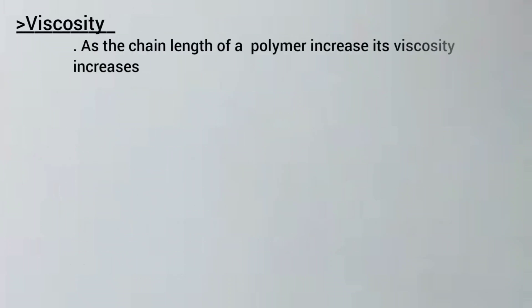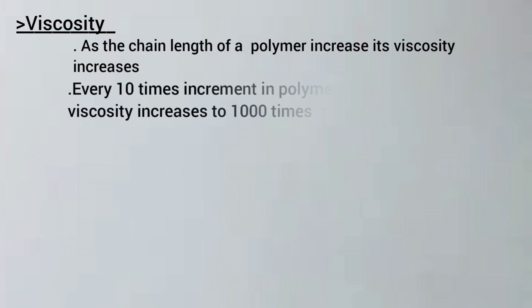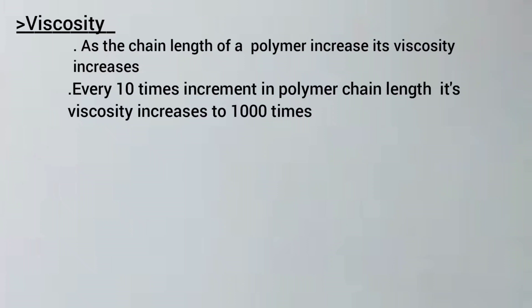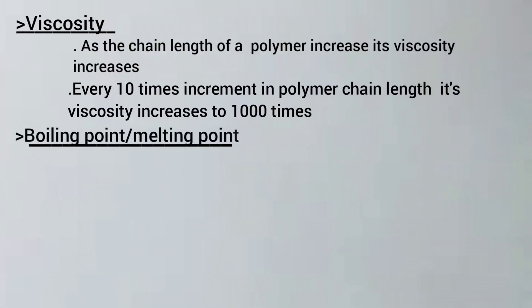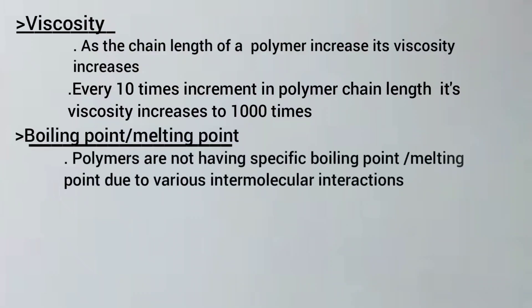As the chain length of a polymer increases, viscosity increases — every 10 times increment in polymer chain length, its viscosity increases 10,000 times, as shown in the graph.